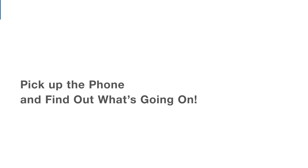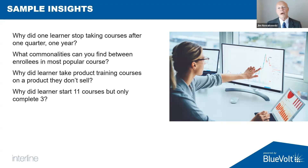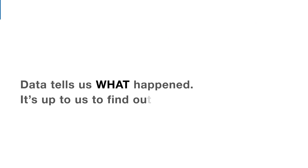There are only one of two conclusions: one, that person is obviously just after the money; or two, he's making a career change and he wants to learn about your products. That's really the answers. There was one learner that started 11 courses but only completed three. When we chatted with the client, it was because they moved him out of that area and he was no longer selling that product set. Sometimes people move around — the data will tell you what happened, and it's up to us to find out why it happened. That's really the key to this puzzle.